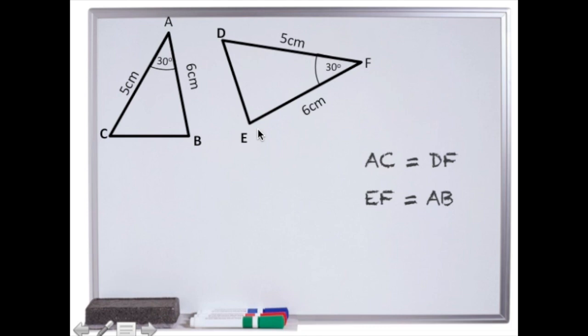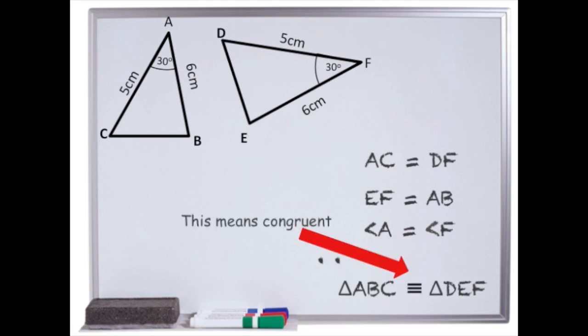And finally, we can also see that this angle in here, angle A, is the same as angle F. They are both 30 degrees. Oh, and by the way, this symbol here is a shorthand way to write angle. And therefore, we can see that triangle ABC is congruent to triangle DEF. These three lines here mean congruent, just so you are aware.